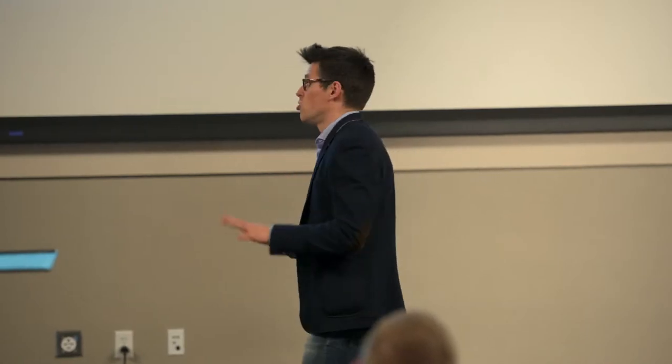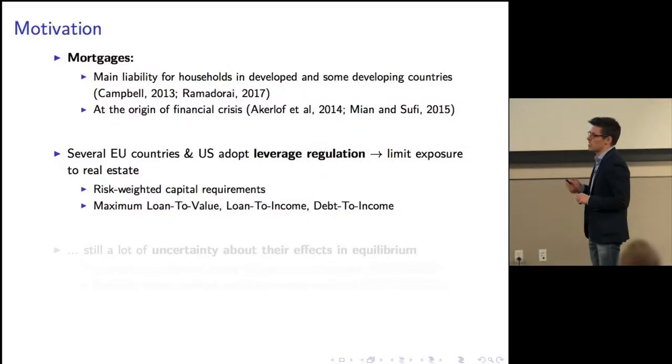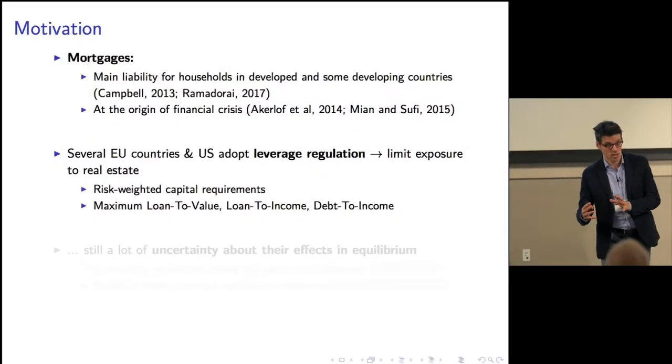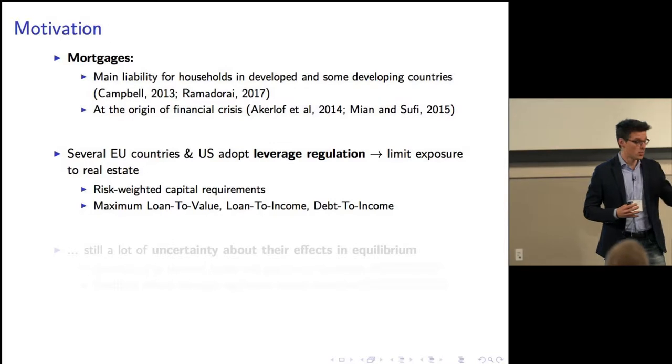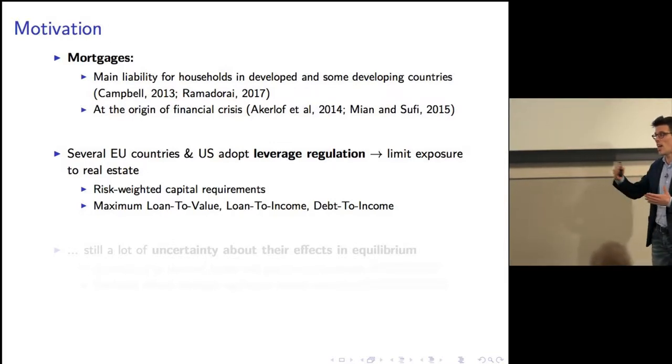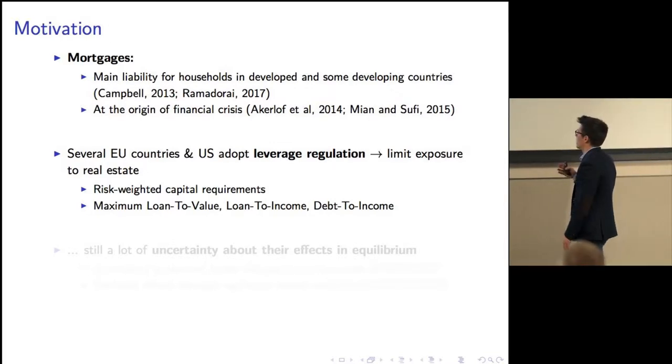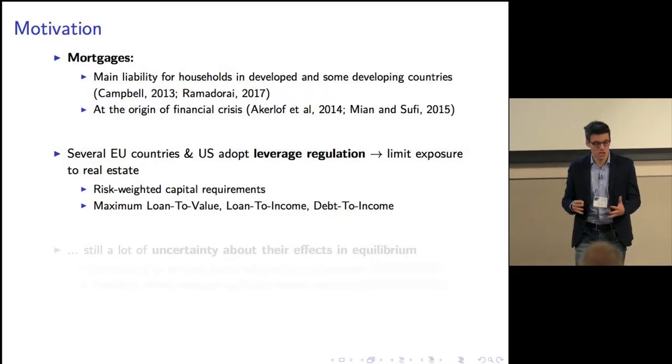Now ten years ago, so to some extent there is no surprise that many countries around the world have adopted some form of regulation in order to limit exposure to the real estate sector. I'm going to focus mostly on two: on the supply side, risk-weighted capital requirements for lenders, and on the demand side, policies that limit the leverage for households like maximum loan-to-value, loan-to-income, or debt-to-income.